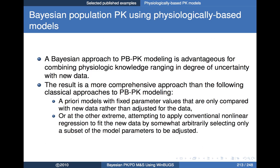For the example, let's consider an approach that takes advantage of two areas of specialty: Bayesian inference and physiologic knowledge. The way we bring those together is using physiologically-based models. What we're talking about here is a Bayesian approach to physiologically-based pharmacokinetic models — PBPK models.